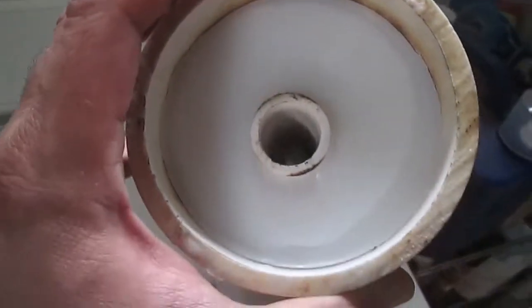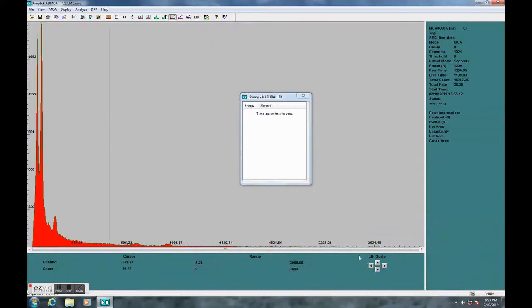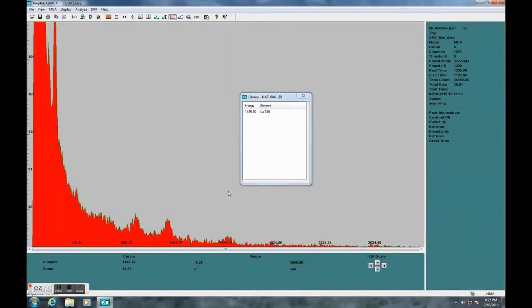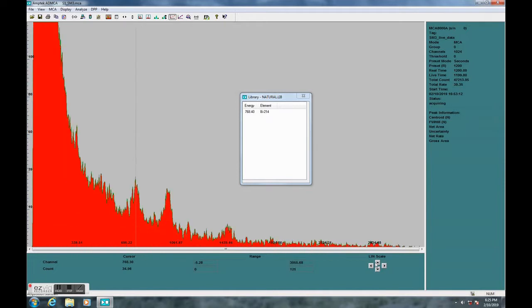Also, the deuterium fusion can on very rare occasion fuse directly into helium-4 and release a powerful gamma at about 20 MeV. So, I may be able to pick it up with my gamma spectroscopy system, but that remains to be tested.